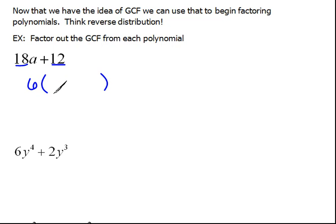Now to complete the factoring, we need to do the reverse distribution. So 6 times what would give you 18a? That would be 3a. Now 6 times what would give you a positive 12? Well that would be a plus 2. So this is the factorization.